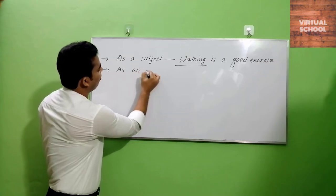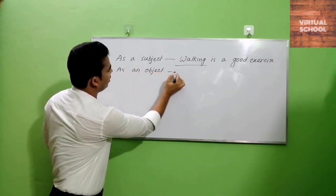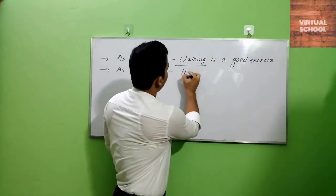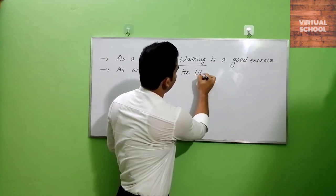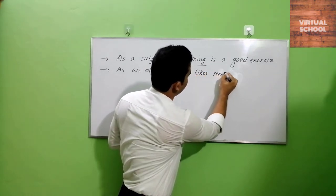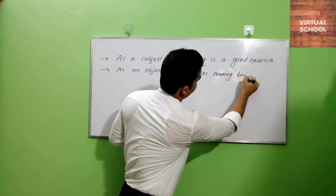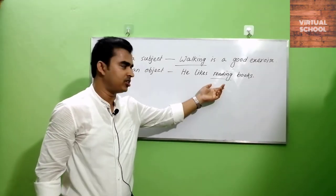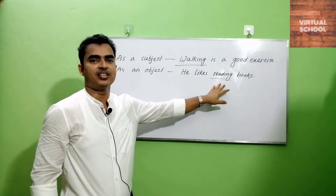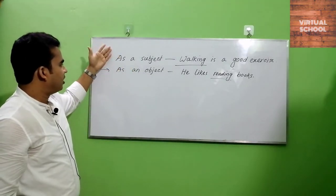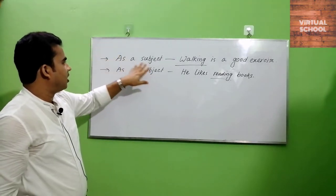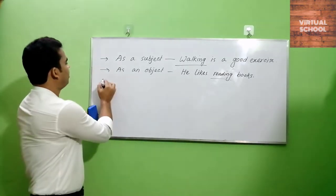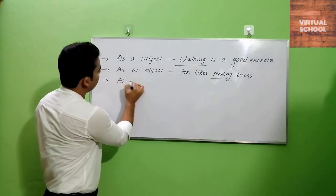As an object: a gerund can be used as an object in a sentence. Such as 'He likes reading books.' Here, reading is an object in the sentence, and this is also a gerund. So we can say that a gerund can be used as a subject, as an object, and a gerund can also be used as a complement.